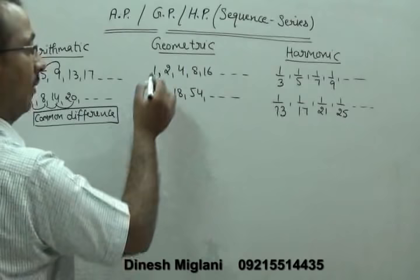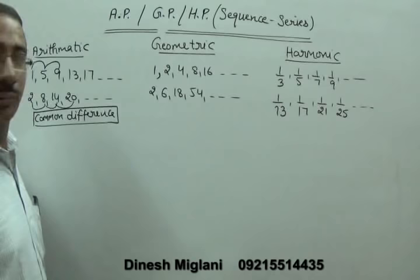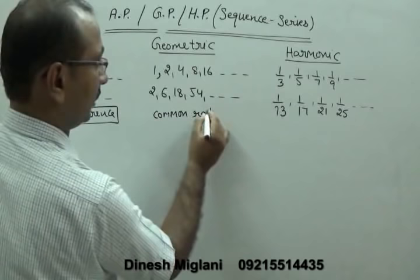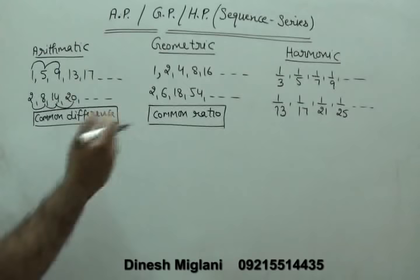For the series 1, 2, 4, 8, 16: 2/1 = 2, 4/2 = 2, 8/4 = 2, 16/8 = 2. For 2, 6, 18, 54: 6/2 = 3, 18/6 = 3, 54/18 = 3. The common ratio in two consecutive terms is the same. A series where the common ratio of consecutive terms is equal is known as geometric progression.